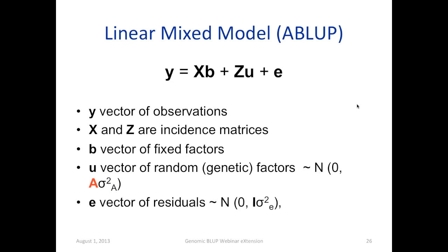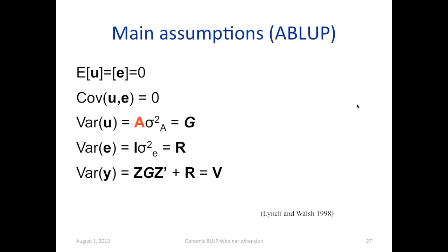The major assumptions of the linear mixed model are that the expectations of the random effects and residuals equal zero, and we assume random effects and residuals are independent of each other. The variance of the random effects is the G matrix, which is the product of the additive genetic relationship matrix and the additive genetic variance. Residuals have an identity matrix, the R matrix, meaning every individual has the same error variance — although those assumptions may change depending on the experimental design, especially for plant breeding.